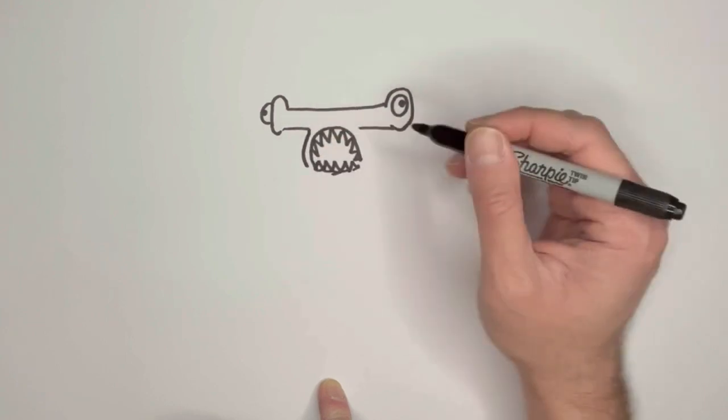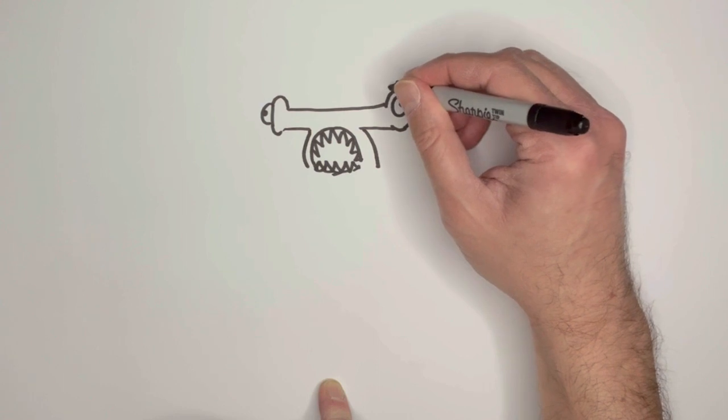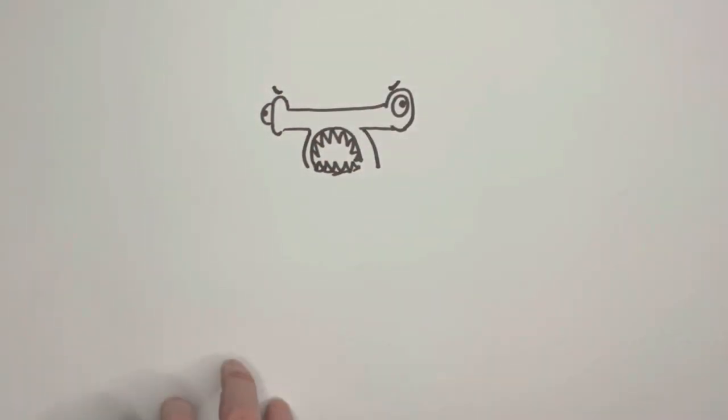There we go. All right, lots of teeth. Maybe some more here at the bottom. We'll just give them a little bit of a bottom lip. There's our hammerhead shark starting to come together. And we'll have this come out. And, of course, because we're going to draw them as a pro wrestler,